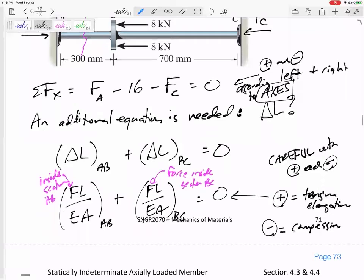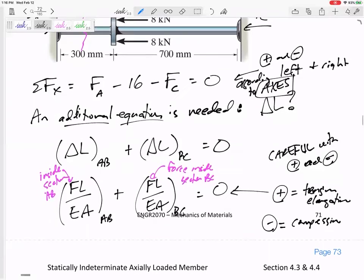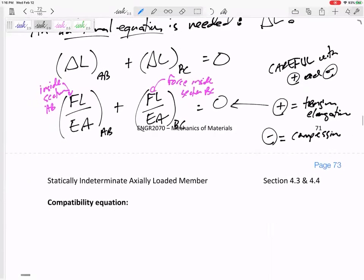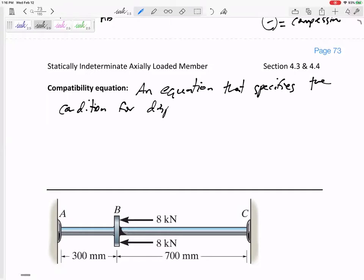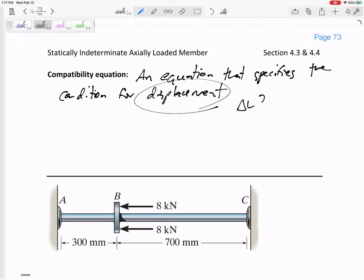So this right here, our additional equation, that's our compatibility equation. That's our compatibility equation. So let's say our compatibility equation is an equation that specifies the condition for displacement. An equation that specifies the condition for displacement. Sometimes it's going to be zero like that problem we just did, like this setup. So displacement is like delta L. So I'll just ask myself, what is happening to delta L?